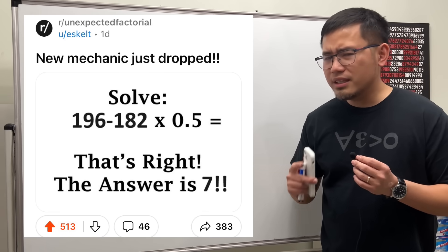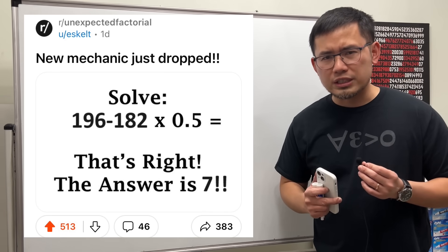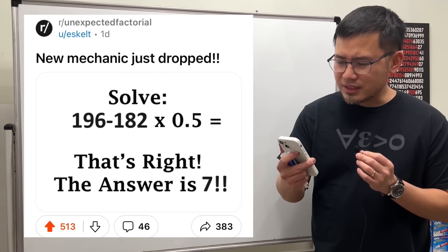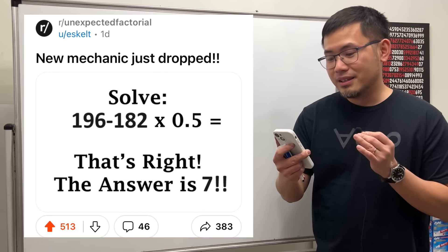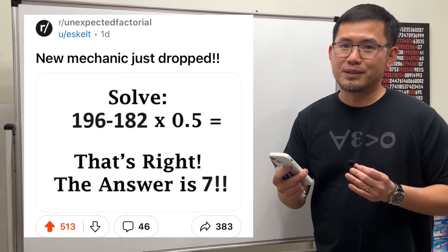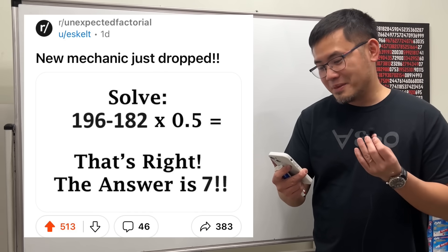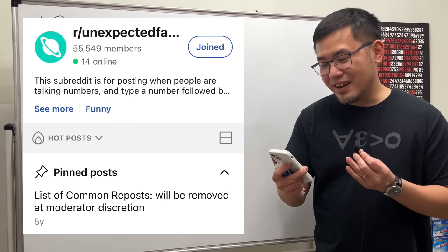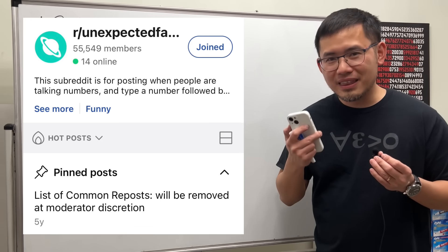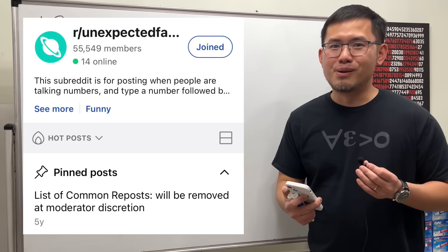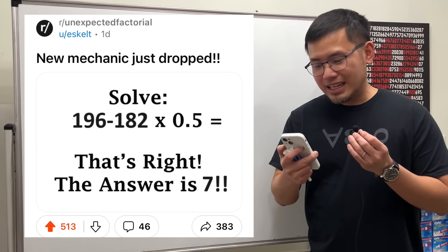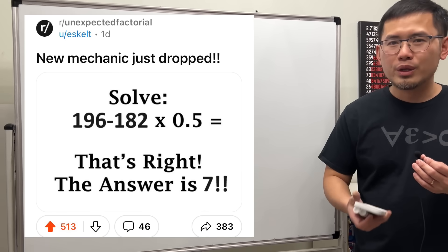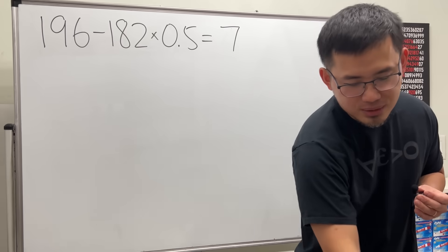I just saw this on Reddit and I really wanted to explain it. This is from the subreddit r/unexpected_factorial — I didn't know that was a thing. In fact, it has over 55,000 members. I'll leave the link to this post in the description so you can go check that out.